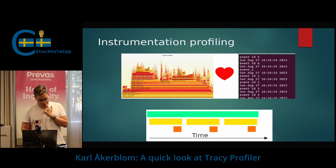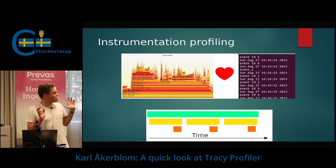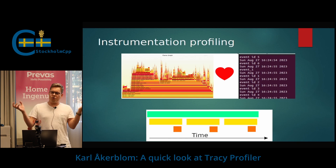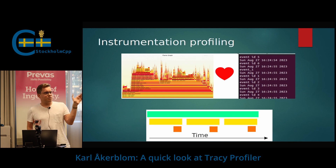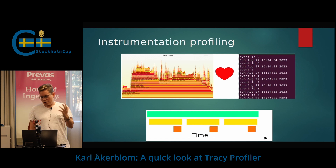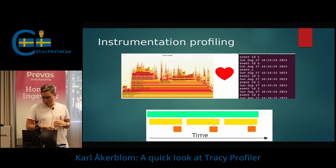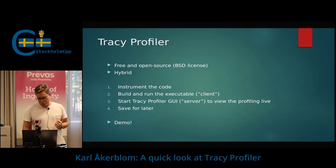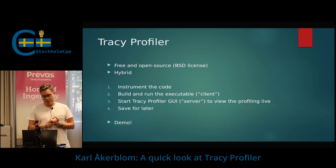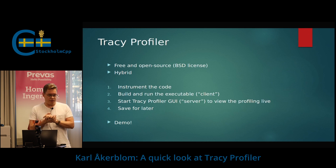Tracy is an instrumentation profiler. I think of it as like if a flame graph and a logger had a baby. You add some extra statements in your code where you're interested in observing your program, and then instead of getting a normal log, you get this nice visual timeline of how your program is behaving. Tracy is a free and open-source tool. It's technically not a pure instrumentation profiler — they call it hybrid, so it has some sampling profiling included — but I will focus on the instrumentation part.